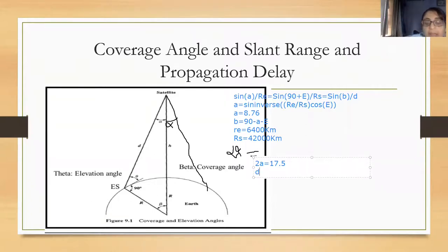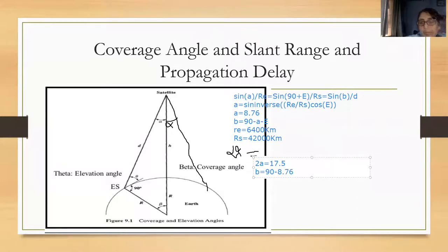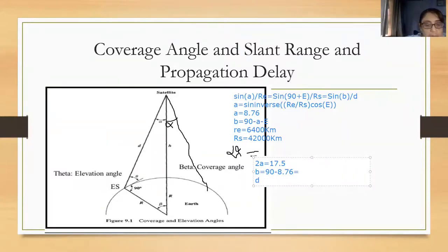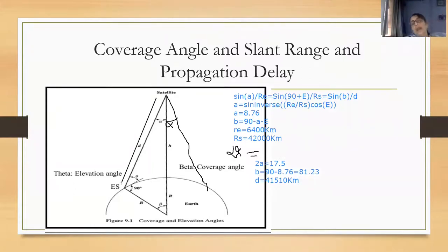Now we need to calculate the slant range D. If you know the values of alpha and E, you can find beta (angle ESO). Using the relation cos E / RS = sine of beta / D, we can get the value of D. The answer for D comes out to approximately 81,230 km. This is called the slant range — the actual distance from the earth station to the satellite.